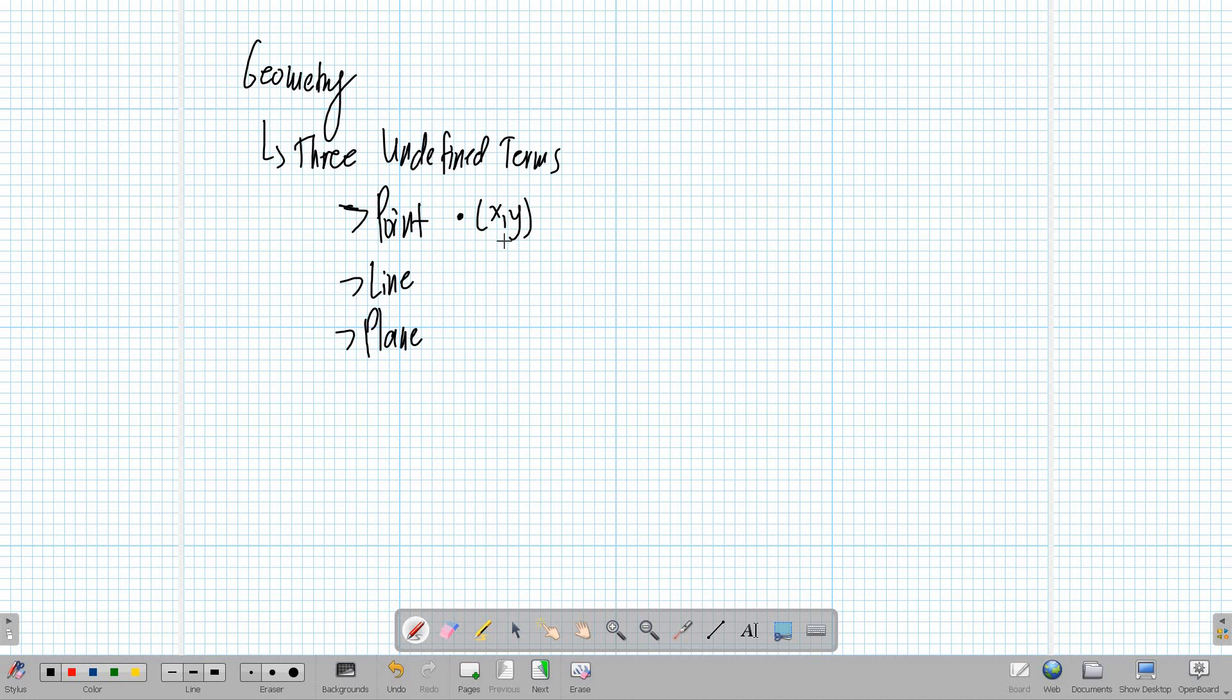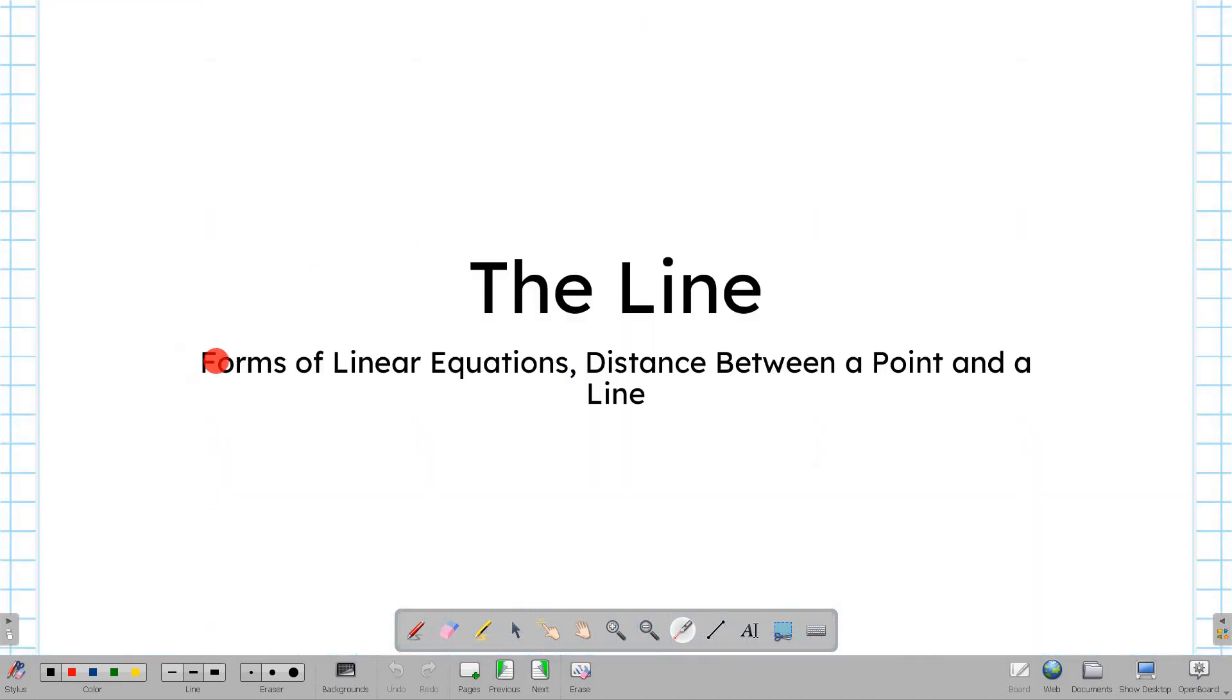Now, let's go to a set of points that extends indefinitely in both directions, which is a line. A line is a set of points that extends indefinitely in opposite directions. One of the main postulates in geometry is that two points determine a line. Let's now focus on the different ways we can express algebraically a line through a linear equation.